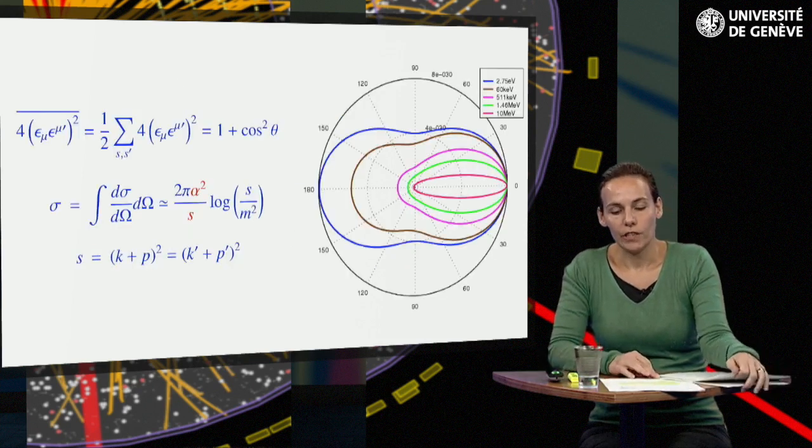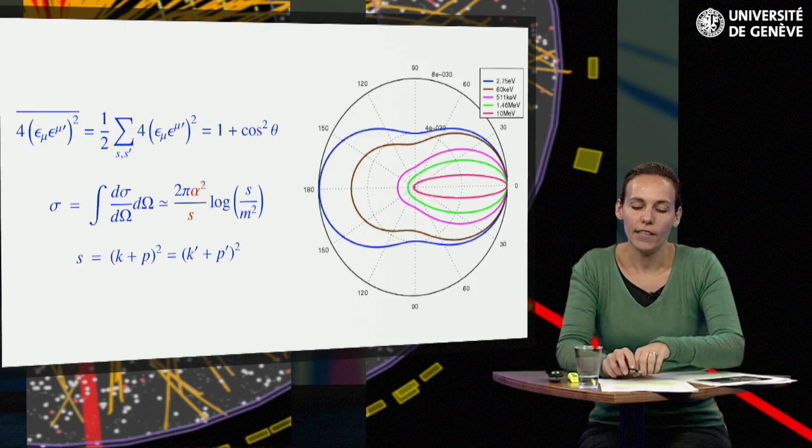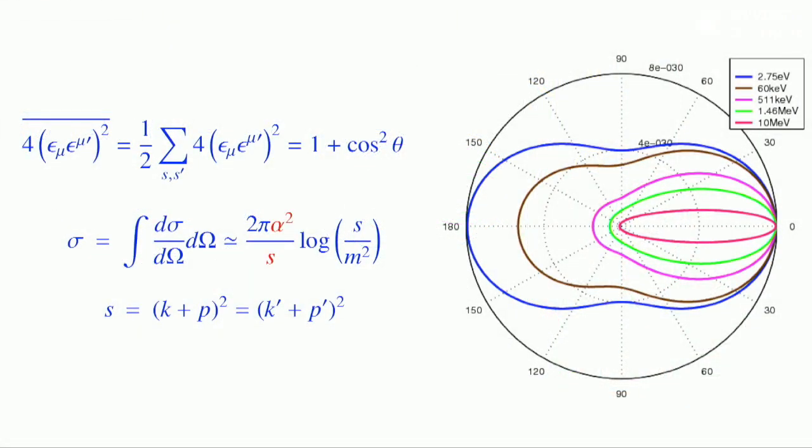When the polarization of the initial state is not known and that of the final state is not measured, we must average the cross-section over the direction of the initial spins and sum over those of the final state. This must be done at the level of the cross-section, not of the amplitudes, because the spin is unobservable, making the contribution indistinguishable. For the factor containing the polarization, this results in a distribution 1 plus the square of cos theta of the scattering angle theta between the incoming and outgoing photons.